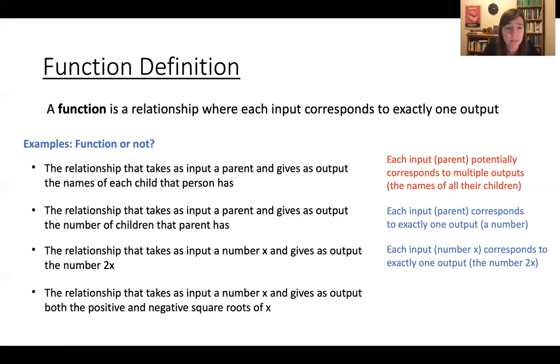Now, how about this? The relationship that takes as input a number x and gives as output both the positive and negative square roots of x. Here, this is not a function. Because now, you have two outputs associated to each input. For some number x, you get the numbers square root of x and minus square root of x.